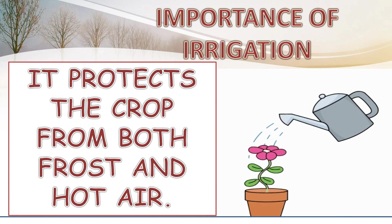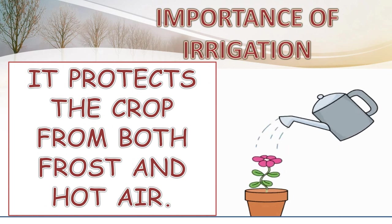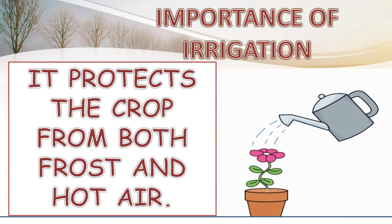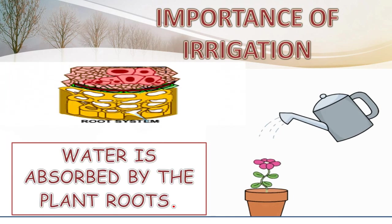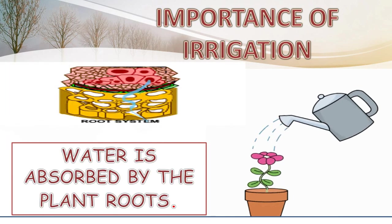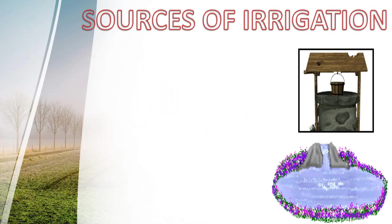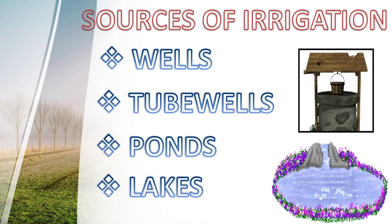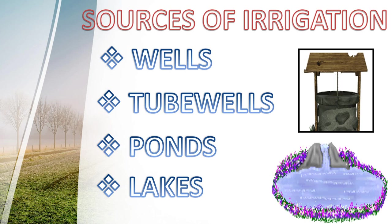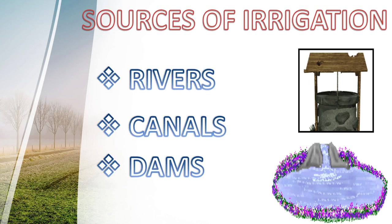It protects the crop from both frost and hot air. Water is absorbed by the plant roots. Sources of irrigation: wells, tube wells, ponds and lakes, rivers, canals and dams.